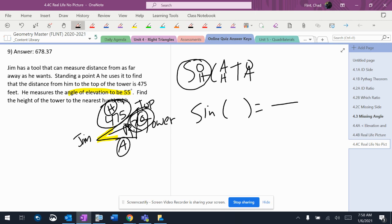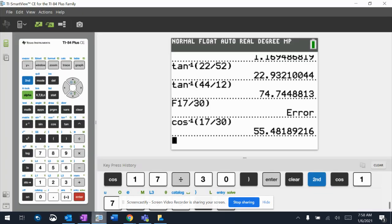Hypotenuse is 475, I don't know the opposite, the angle is 55°. Since I know the angle, I'm going to put it over one and cross multiply.